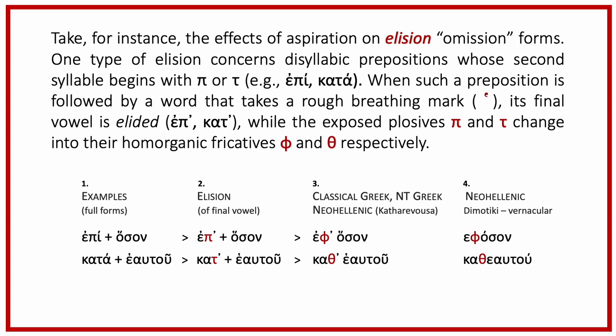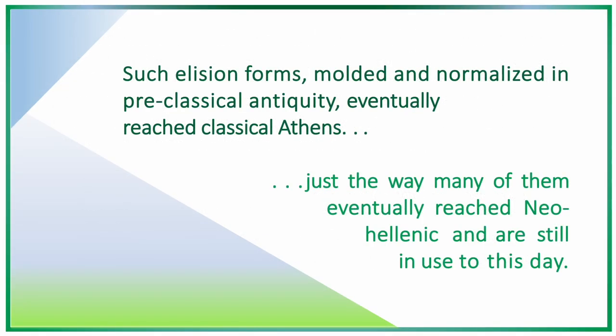In the fourth column, you see the same two pairs of words in compound form as they are spelled in daily neo-Hellenic or Demotiki. Notably, numerous compound forms in today's neo-Hellenic are traceable diachronically to New Testament times, to classical Greek, and beyond. Again, such elision forms, molded and normalized in pre-classical antiquity, eventually reached classical Athens, just the way many of them eventually reached neo-Hellenic, and are still in use to this very day.